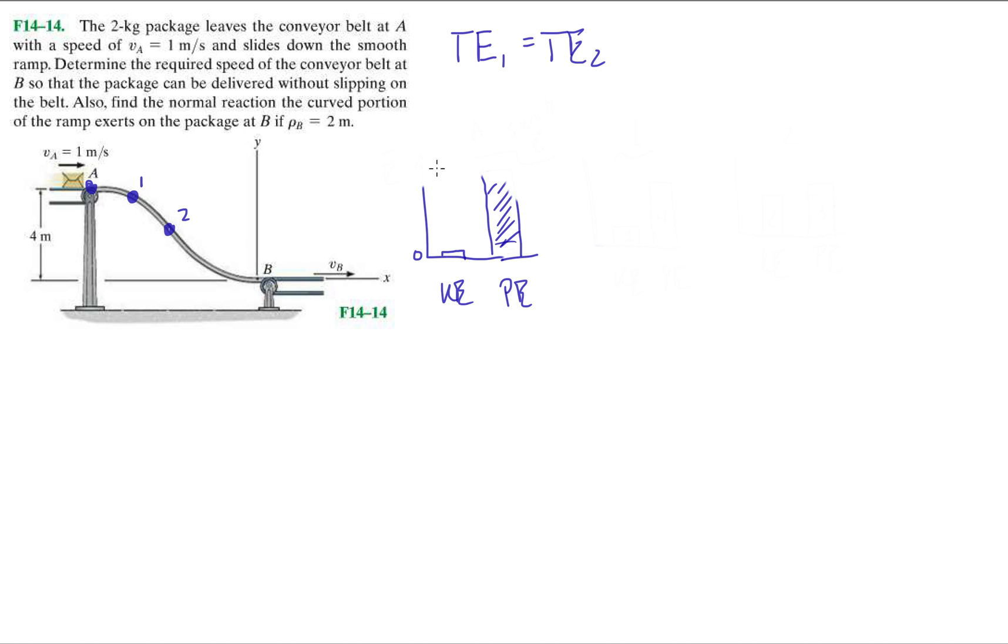So, moving on, let's look at this problem. The 2-kilogram package leaves a conveyor belt at A with a speed of VA equals 1 meters per second. So it starts off with some kinetic energy and slides down the smooth ramp. Determine the required speed of the conveyor belt at B so that the package can be delivered without slipping, meaning the package has to match the velocity of the conveyor belt, so there's no friction between them that might cause them to slip.